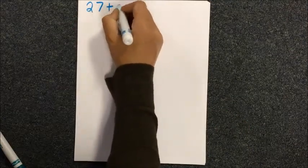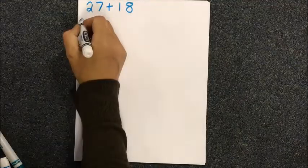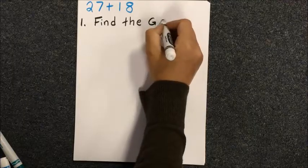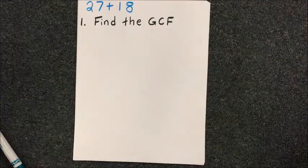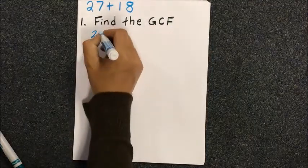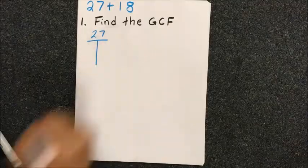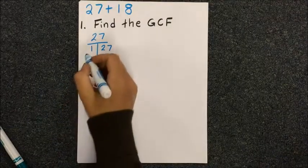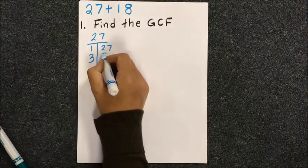Let's try this with numbers. Say we have 27 plus 18. First step is to find the greatest common factor. I like using a t-chart to list out the factors because it keeps it organized and you have less chance of accidentally missing factors.